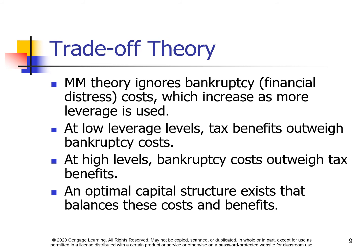Trade-off theory. MM theory ignores bankruptcy, or financial distress costs, which increase as more leverage is used. At low leverage levels, tax benefits outweigh bankruptcy costs. At high levels, bankruptcy costs outweigh tax benefits. Therefore, an optimal capital structure exists that balances these costs and benefits.